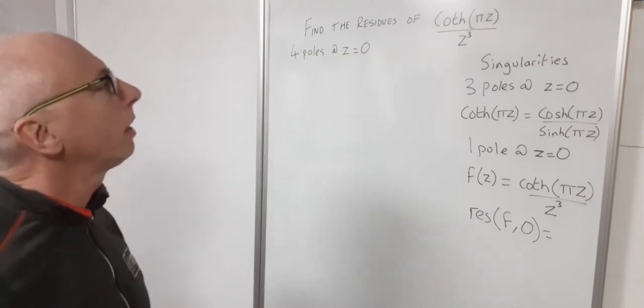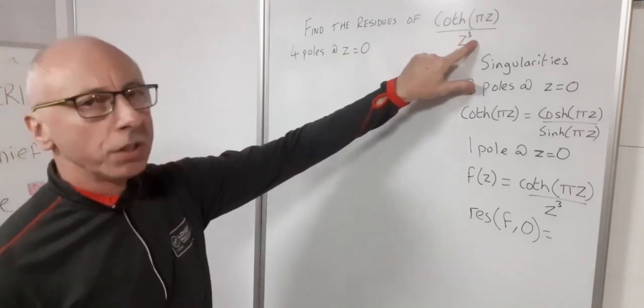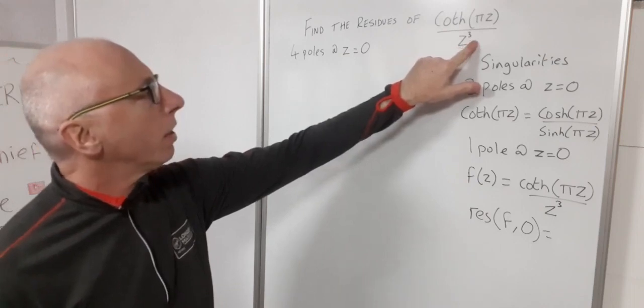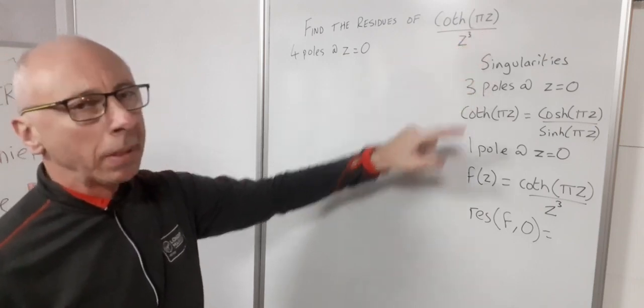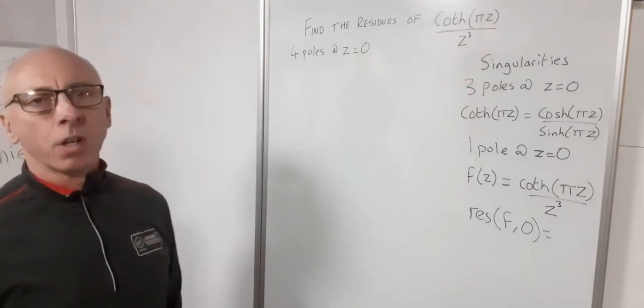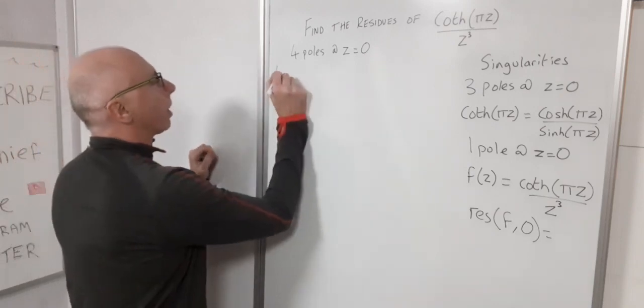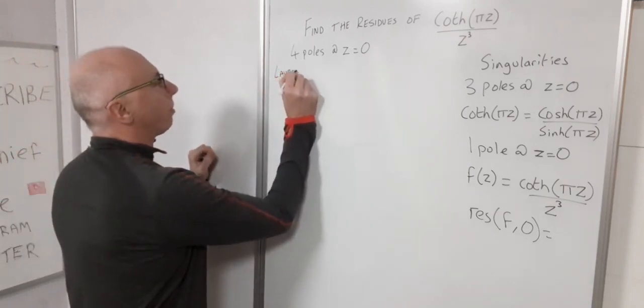Okay now how are we going to go about doing that? Well to take the derivative of this it's going to be a bit awkward with the hyperbolic cotangent function there. What about if we do the Laurent series? That looks like the most straightforward way. So we're looking for the Laurent series.